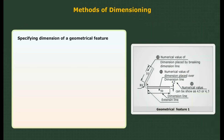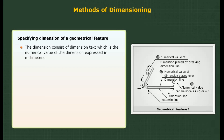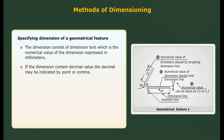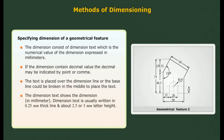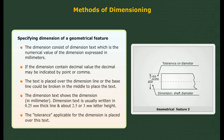How to specify the dimension of a geometrical feature: The dimension consists of a dimension text, which is the numerical value of the dimension expressed in millimeters. If the dimension contains decimal values, the decimal may be indicated by a point or comma. The text is placed over the dimension line, or the baseline could be broken in the middle to place the text. Dimension text is usually written in 0.25 mm thick line and about 2.5 or 3 mm letter height. The tolerance applicable for the dimension is placed over this text.